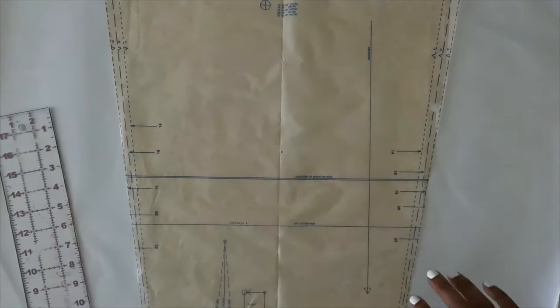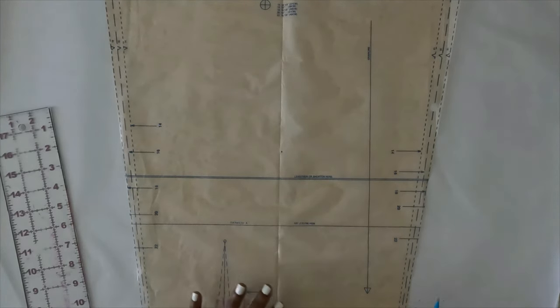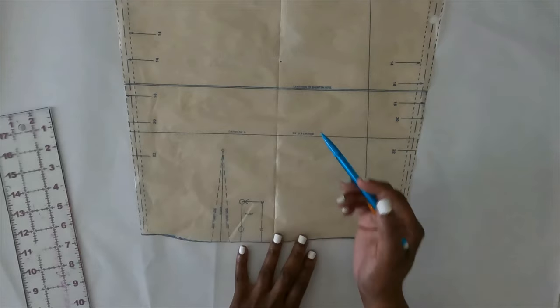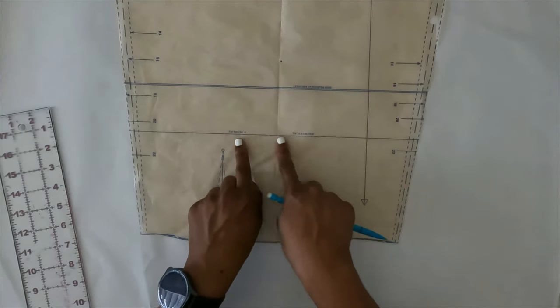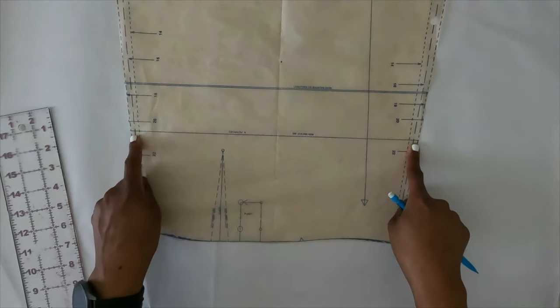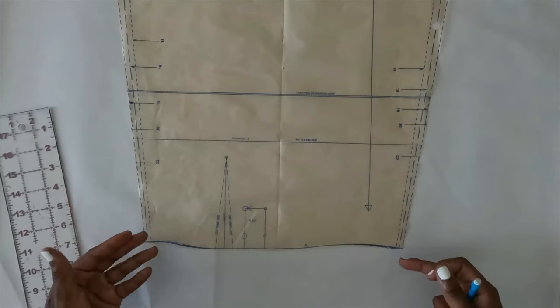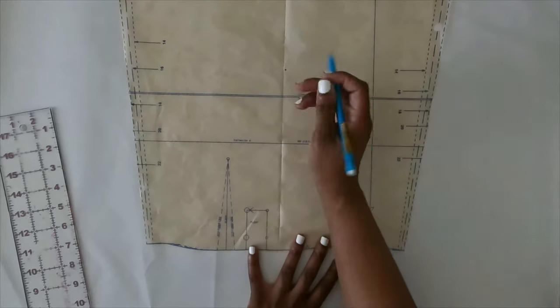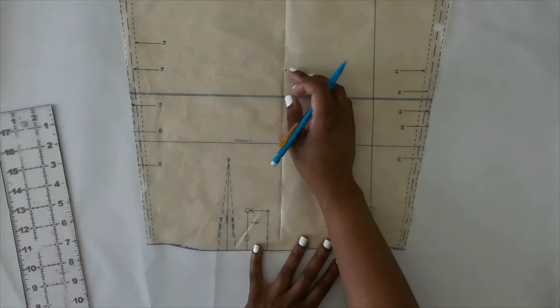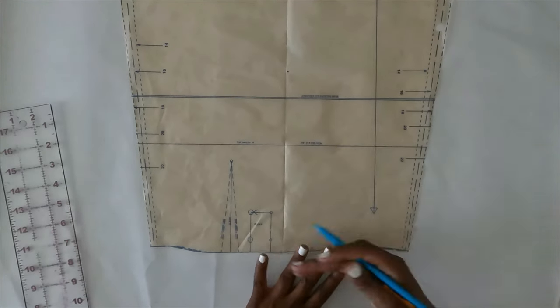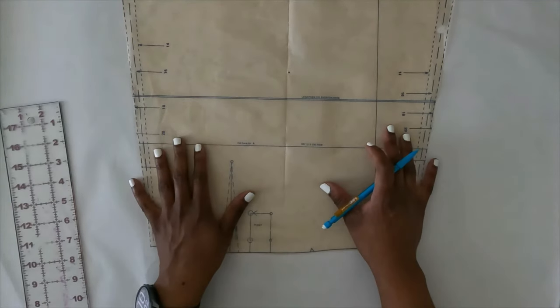So when I transfer the dot now, the reason why it's 15 and a half is because this is the cutting line for view A, which is the view that I'm doing, but that's not what I'm going to do. I'm going to make it long sleeves so I can roll it up and have that tab to keep it rolled up really, really good.